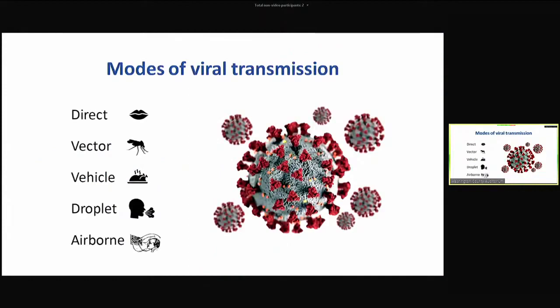There are five main modes of viral transmission. Every virus has a mode or multiple modes of transmission: direct contact with bodily fluid, vector through a mosquito for example, a vehicle like improperly cooked Thanksgiving turkey stuffing, droplet transmission which we all think of as coughing and sneezing, and finally airborne.